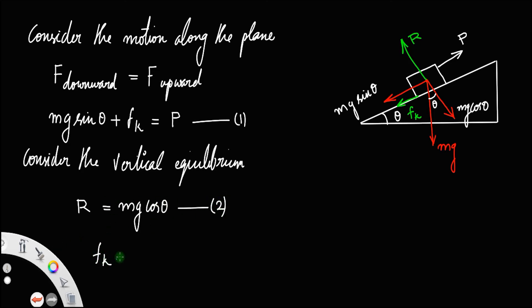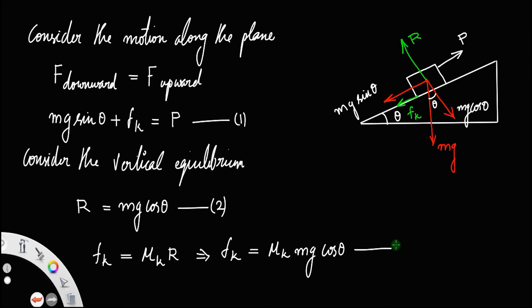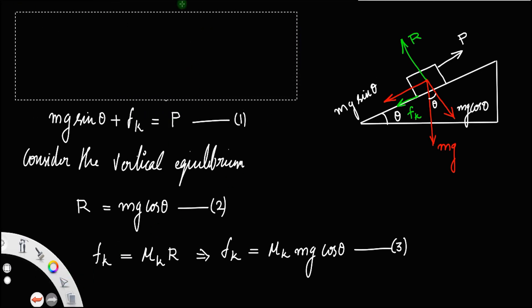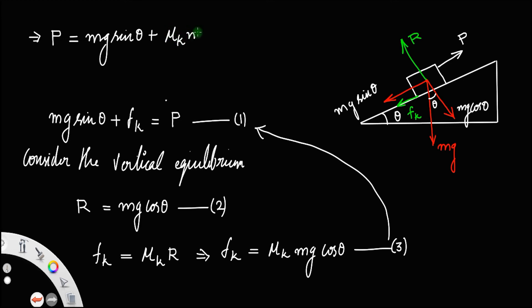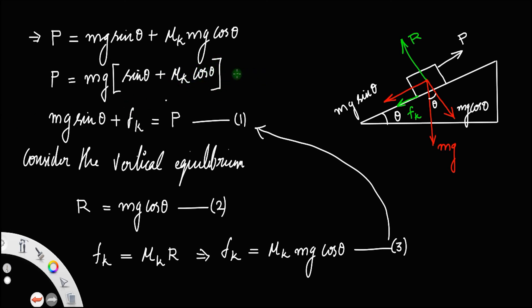The frictional force fk equals mu k times the reaction, and the reaction is mg cos theta, so fk = mu k × mg cos theta. Call that equation number three. Substituting equation three into equation one, we get P = mg sin theta + mu k × mg cos theta, which simplifies to P = mg(sin theta + mu k cos theta). Let us call that equation number four.